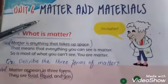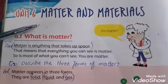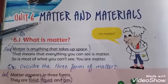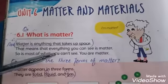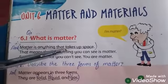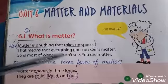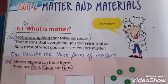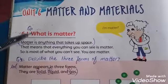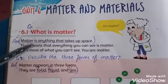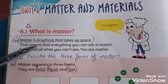Dear students, all the things that are present on the earth are made up of matter. Matter is a thing that takes up space or place. It means everything that you can see on the earth is matter.